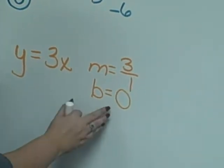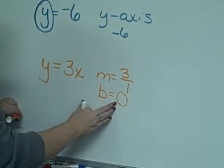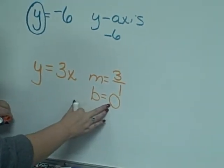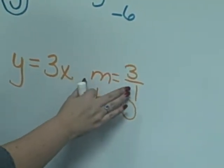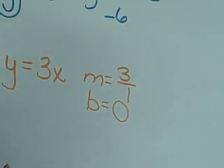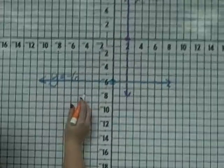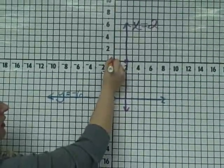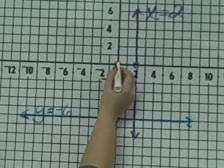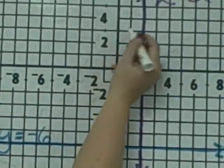So if we were to graph this equation, we would start at the y-intercept, or begin with b at the origin, and we'll rise 3 and run 1. Let's go over to our graph. We begin with 0. And our slope is 3 over 1, so we'll rise 3 and run 1.